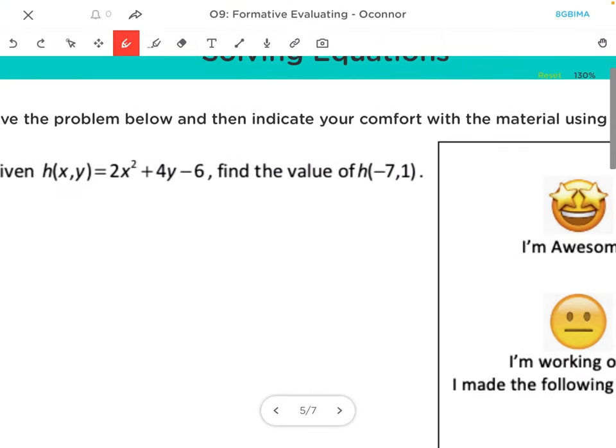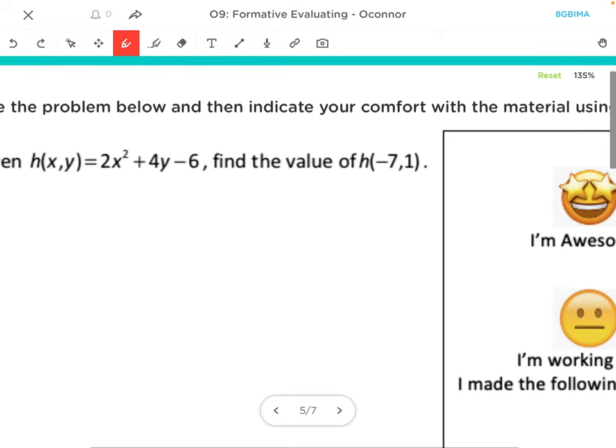Alright, we want to plug in our values for x and y. Negative 7 is what we're going to plug in for x, and 1 is what we're going to plug in for y.